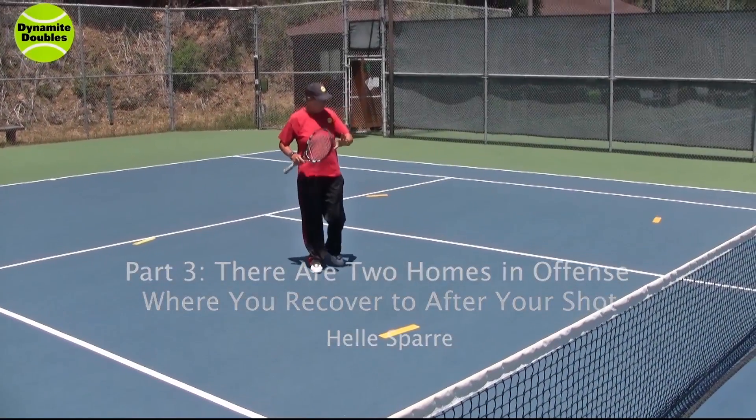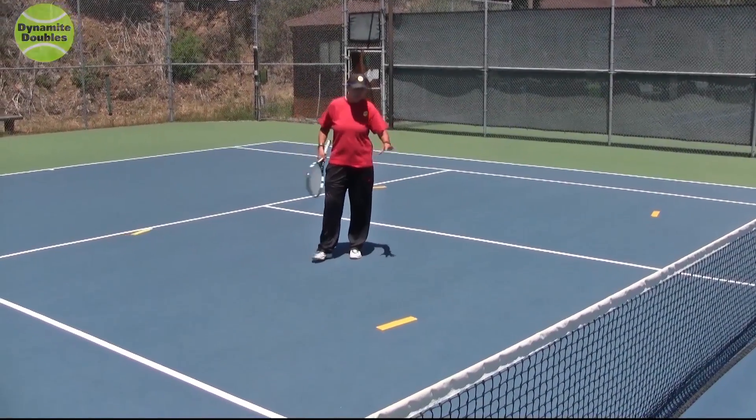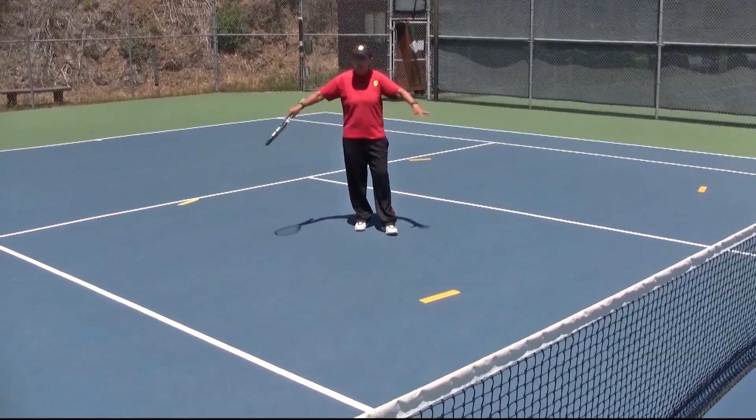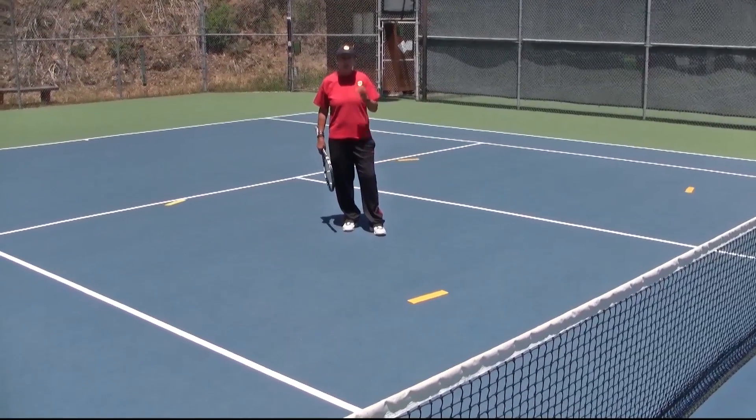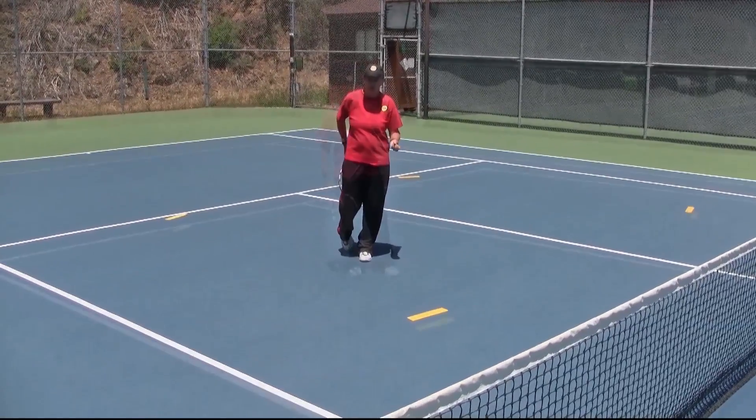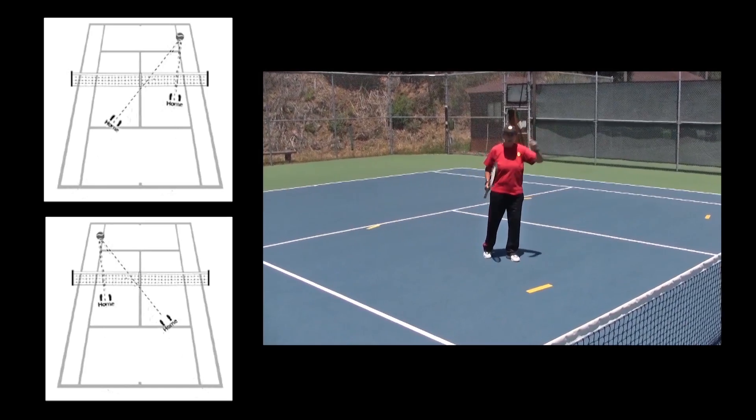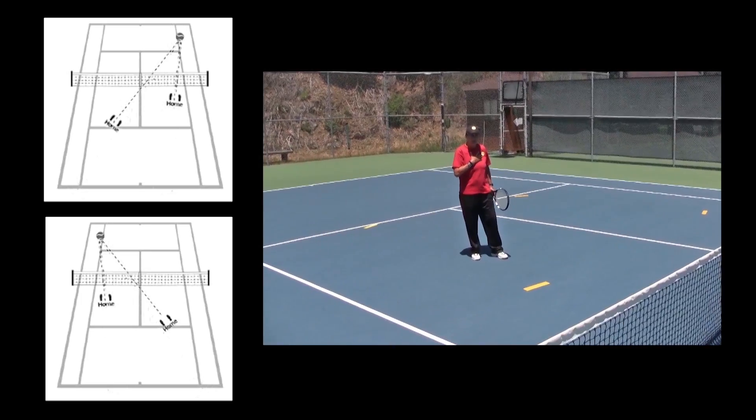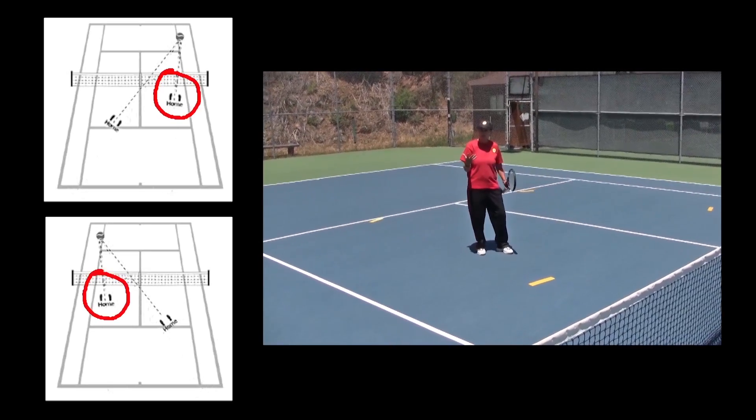We have put out some homes that are safe places to be on the court when we're playing doubles, and this is all in offense right now. A home means the place you recover to after your shot. After every ball we hit, we need to get to our homes. I being the terminator in offense.